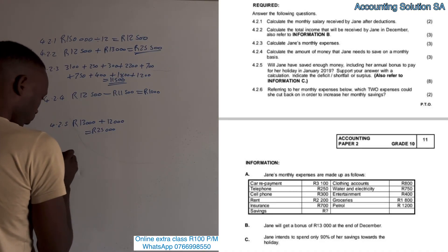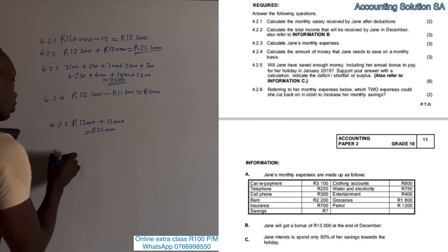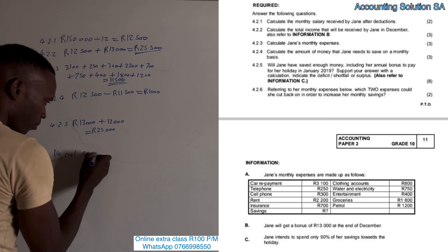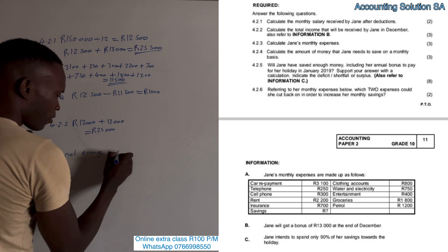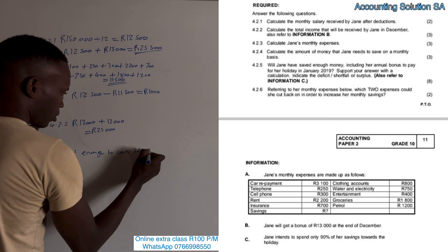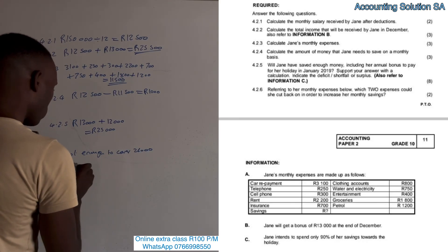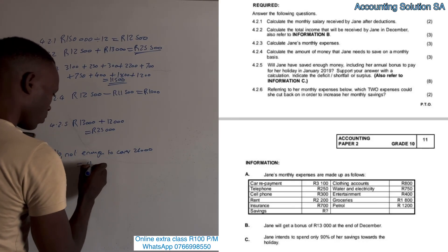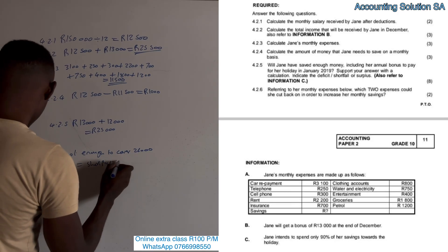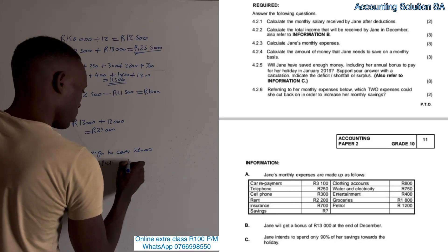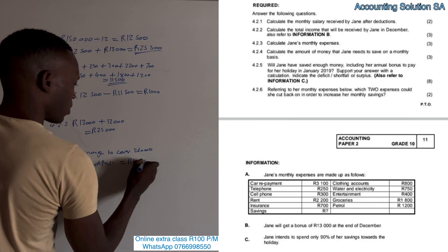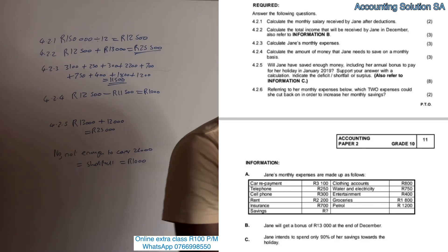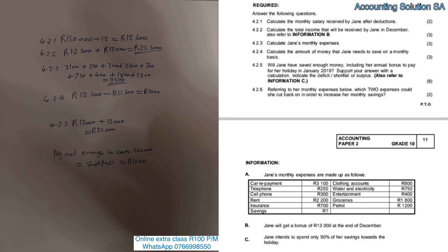The question says support your answer with calculations and indicate whether it's a surplus or deficit. Is she going to have enough money? Remember they said she needs R26,000 from that budget. The answer is very simple: No, she's not going to have enough to cover R26,000, which means she's going to have a shortfall of R1,000.